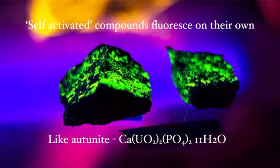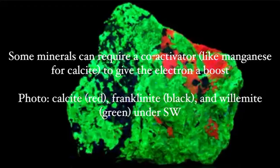Self-activated compounds fluoresce on their own — they can just do it by themselves, like the mineral autonite. Some minerals can require a co-activator, like manganese for calcite, to give the electron a boost. It just needs a little bit of help sometimes, like all of us do.